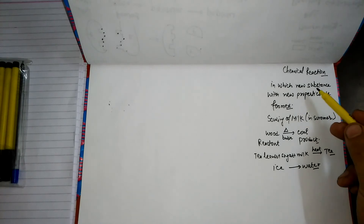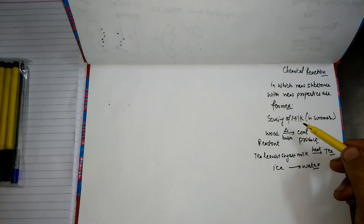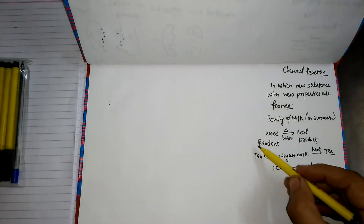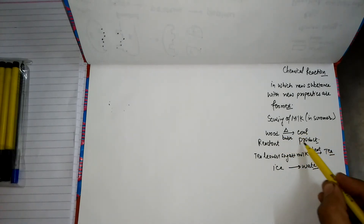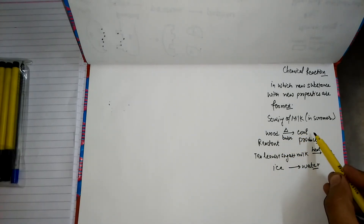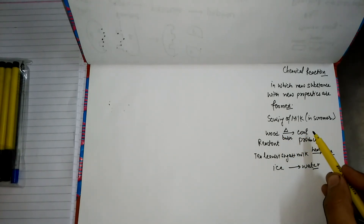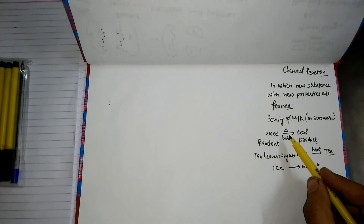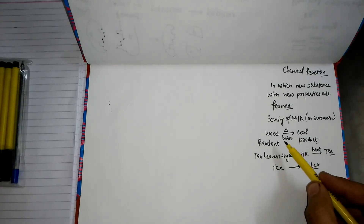Similarly, fermentation of grapes and rusting of iron — when iron is left exposed to a humid atmosphere, it becomes reddish-brown, so we say a chemical reaction takes place. The substances in a chemical reaction, known as reactants, are converted into new substances called products. The conversion of reactants into products is often accompanied by new features.